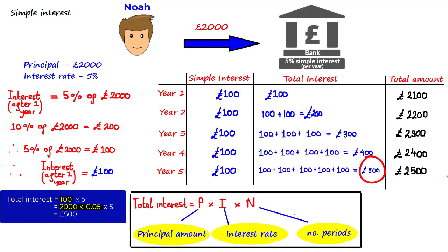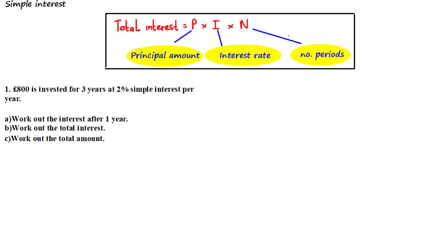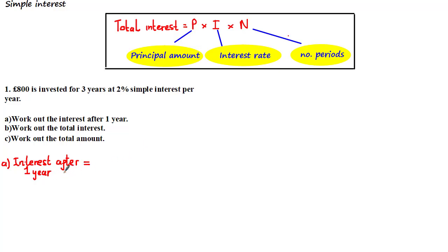Let's look at some typical problems involving simple interest, assuming you can use a calculator. The first question says that £800 is invested for three years at 2% simple interest per year. Part A asks us to work out the interest after one year. From the question, the principal amount is £800 and the simple interest rate is 2%. Using the PIN formula, the interest after one year equals 800 times 0.02 times 1. Working this out gives an interest of £16.